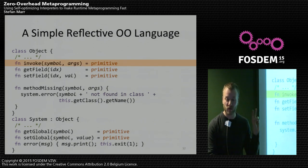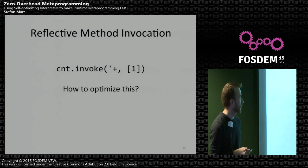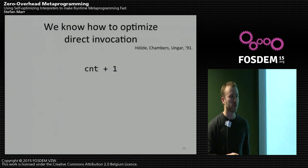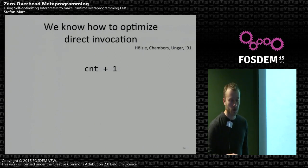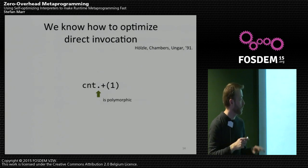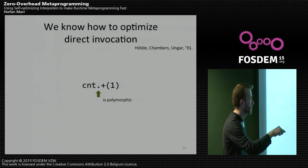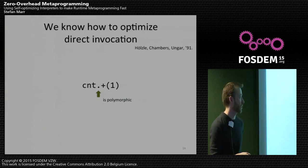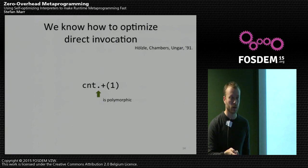Let's focus just on perform — standard reflective method invocation where you give it a symbol and an array for all the arguments. How can we possibly optimize that? Let's first look at what people came up with for standard message sends in Smalltalk — the classic polymorphic inline cache paper. You have some variable with whatever value and then a plus message send with one argument.